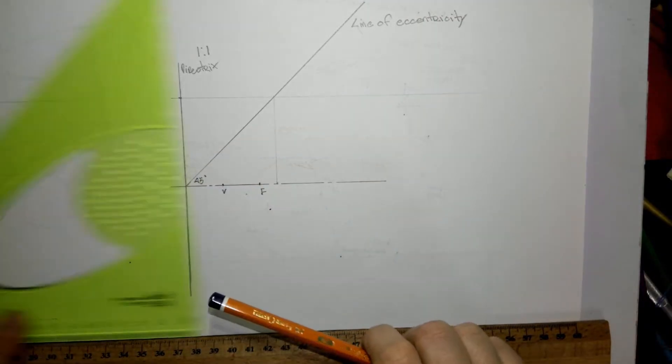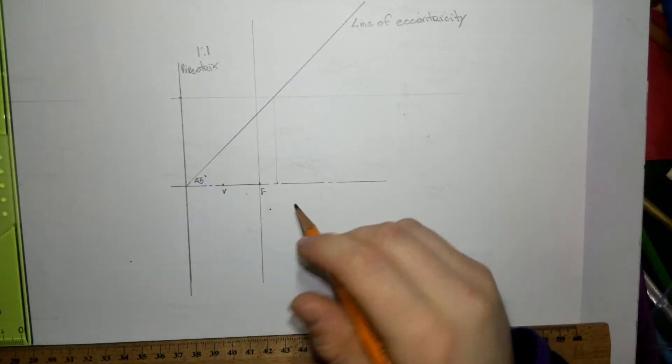Now we're going to draw in our latus rectum, a vertical line running through F.